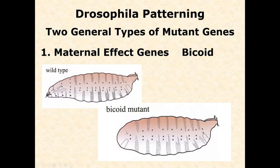Because Bicoid is a maternal effect gene, you can find a mother who has a mutated version. But because her own mother didn't have a mutated version, she develops fine and looks like a regular fruit fly. She carries the mutated version and passes it on to all of her offspring, and because it's a maternal effect gene, all of her offspring develop no heads. In the wild this is never passed down, but in the lab you can work with those individuals, look at their offspring, and study them.